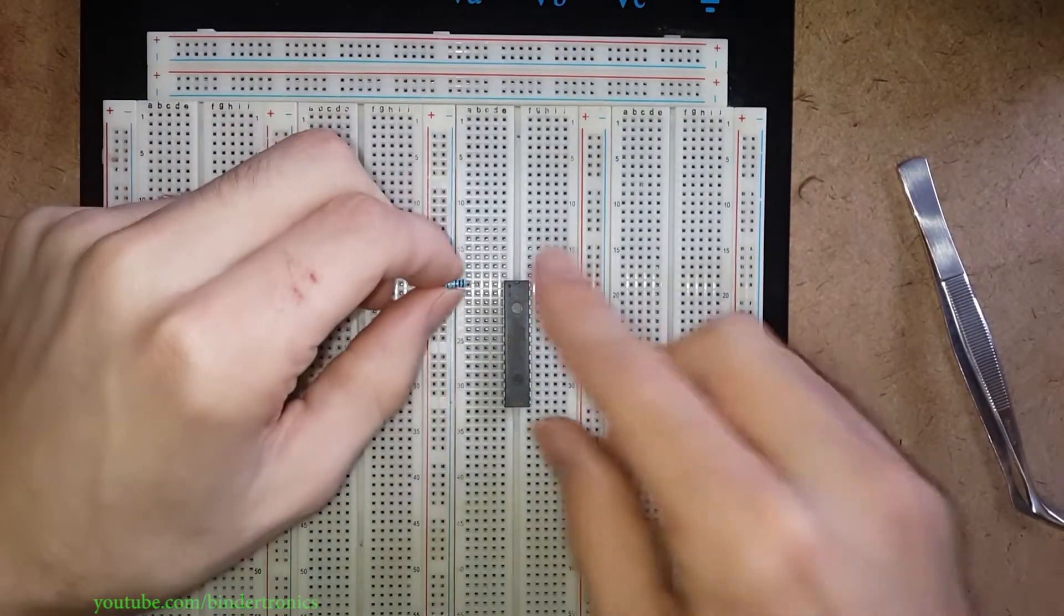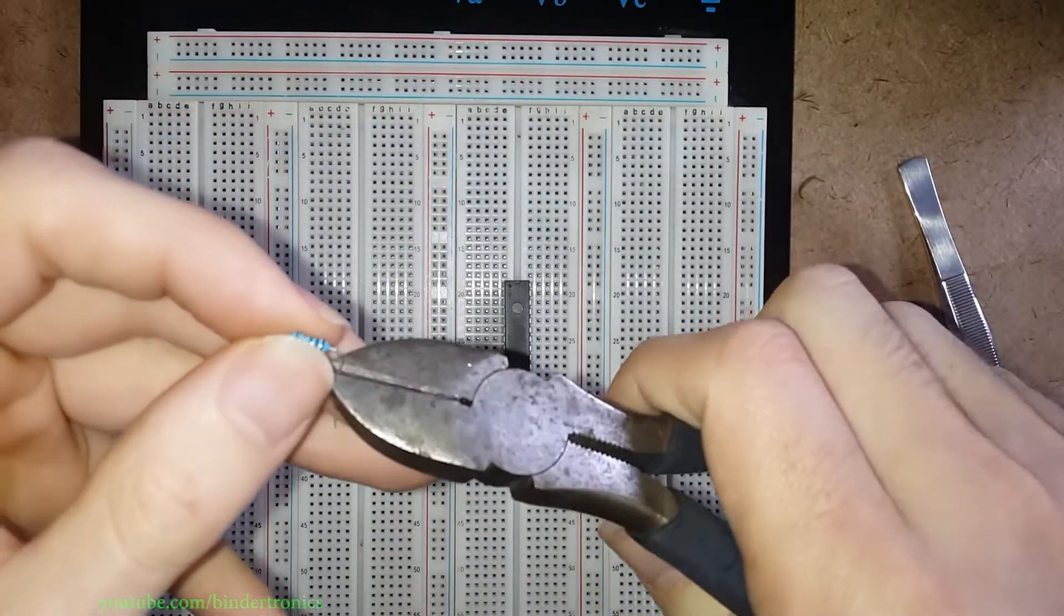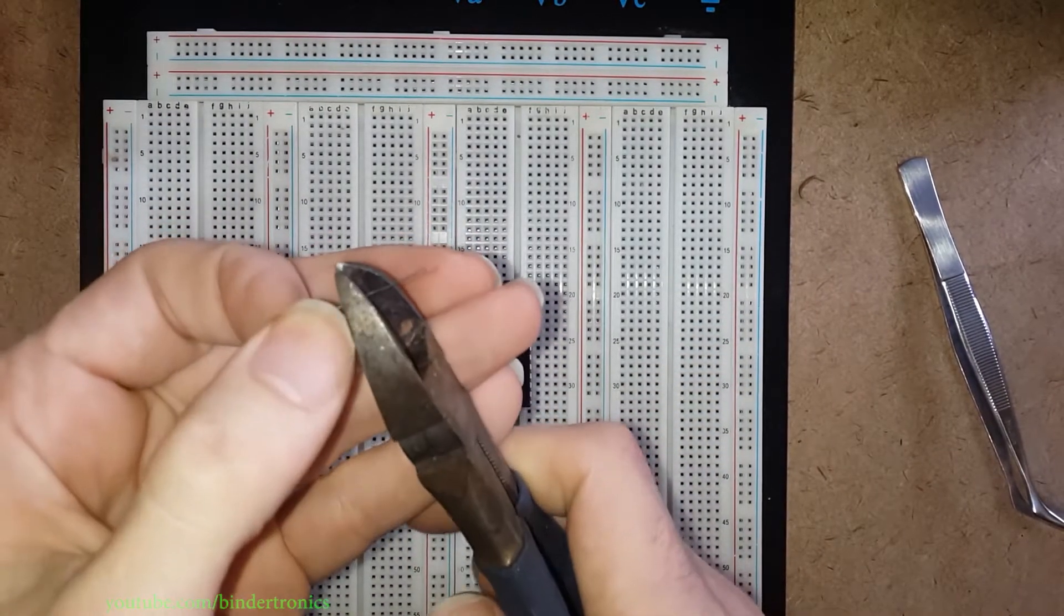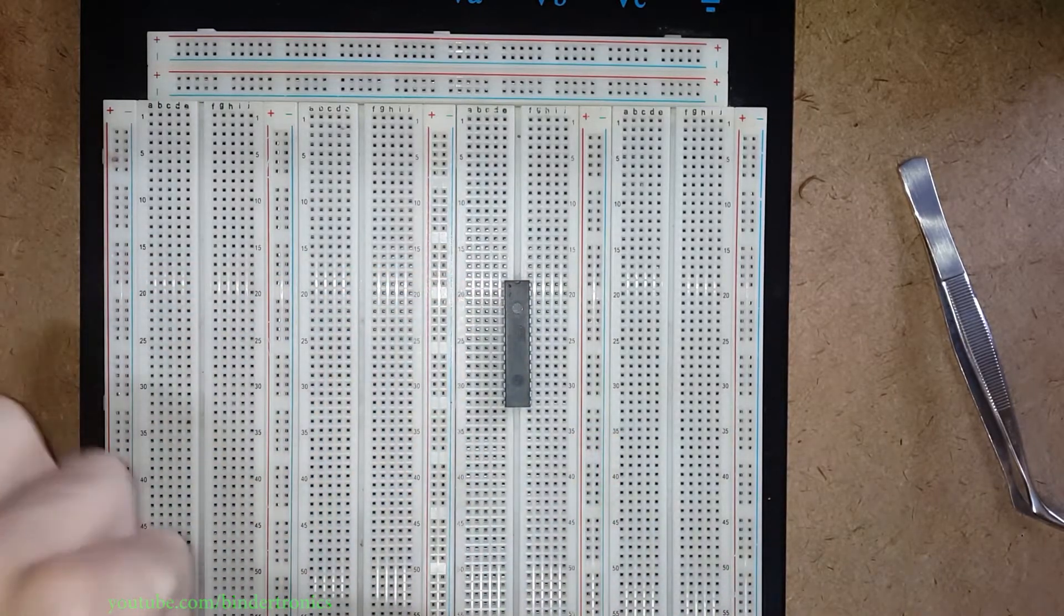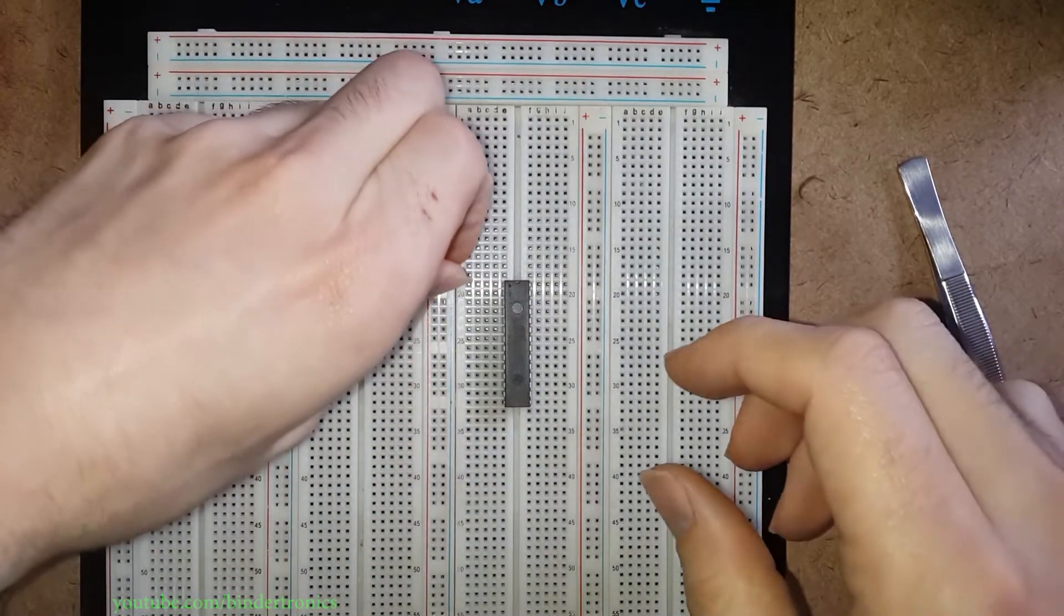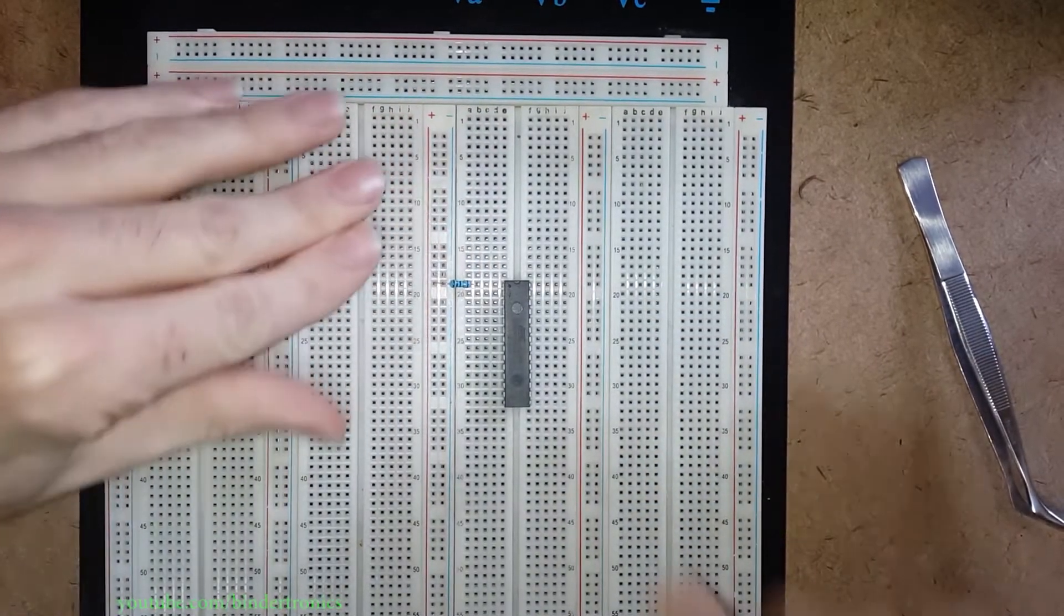Okay now that we have a measurement, take our resistor and trim it down. So I'm going to repeatedly use this board to trim down the resistor.